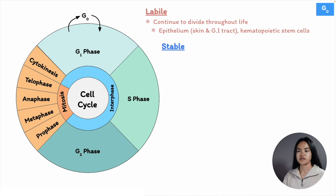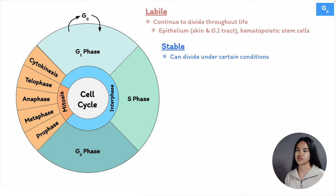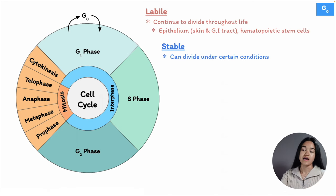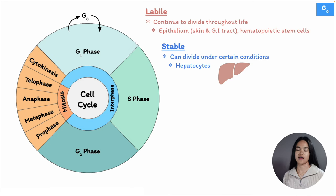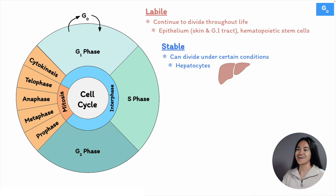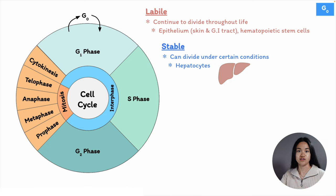Stable cells aren't usually dividing, but they can under certain conditions when stimulated — they can enter the G1 phase. A great example includes hepatocytes, or liver cells. If you cut off a third of your liver, it can regenerate itself because these are stable cells. Absolutely breathtaking — liver cells can regenerate if you cut a portion of the liver.